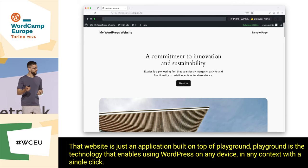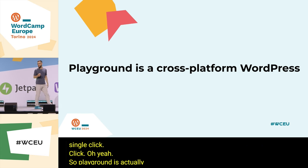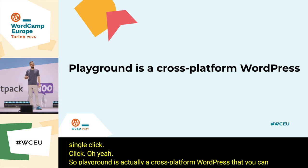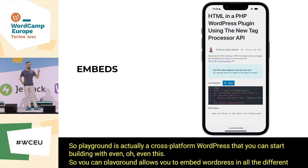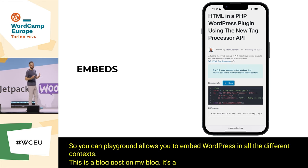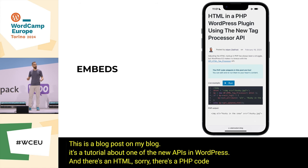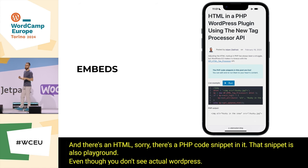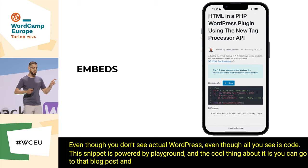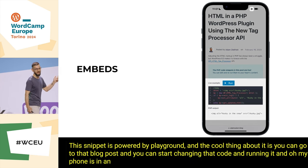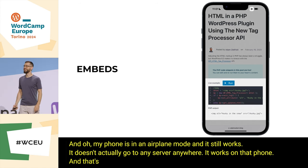Playground is the technology that enables using WordPress on any device in any context with a single click. You can embed WordPress in all different contexts. This is a blog post on my blog — a tutorial about one of the new APIs in WordPress — and there's a PHP code snippet in it that is also powered by playground. You can go to that blog post, change that code, and run it. My phone is in airplane mode and it still works — it doesn't go to any server anywhere.